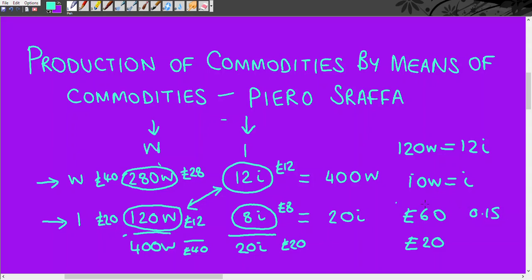We multiply 0.15 by 280, so now the part of this product going to the iron industry is £42, and the price of the surplus is £18. Now in the iron industry, this part of the product is £18.